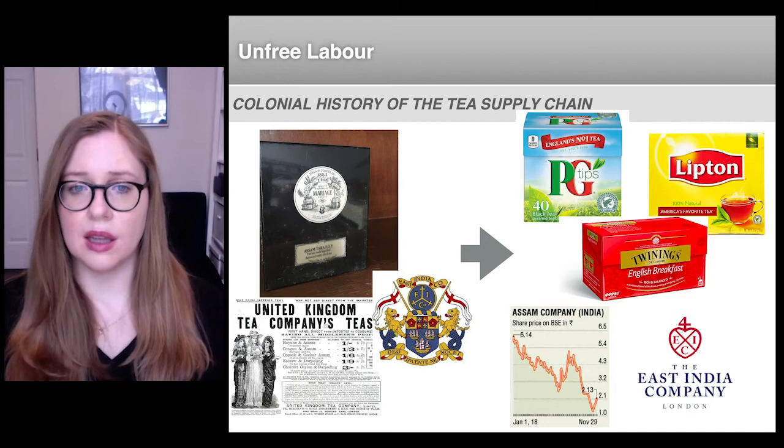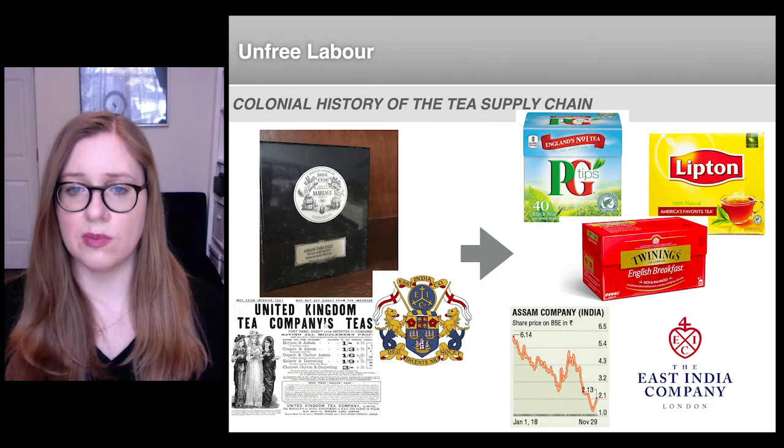In the 1830s, the Wastelands Act allowed large portions of Assam to be transformed into tea plantations by private companies, and military force was deployed by companies to establish these first plantations, fulfilling British demand for tea through extraction, dispossession, and exploitation.